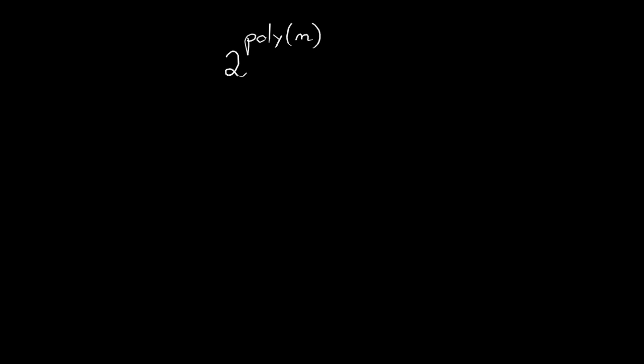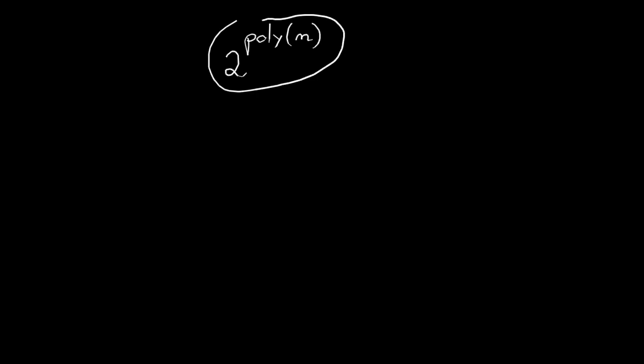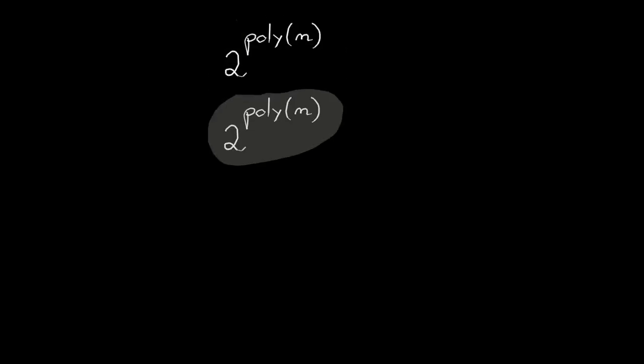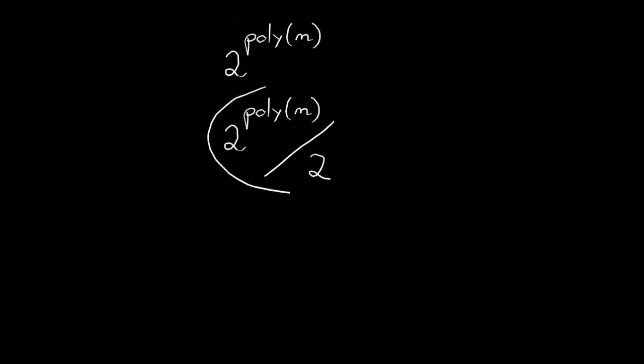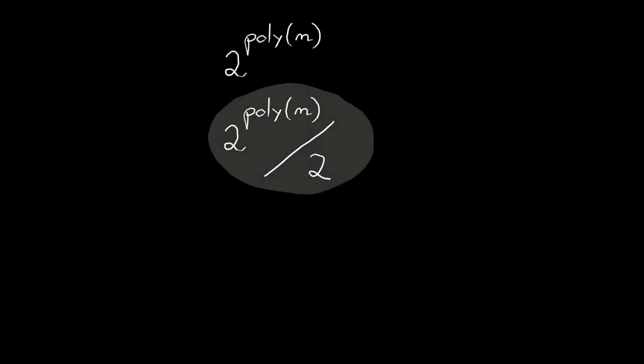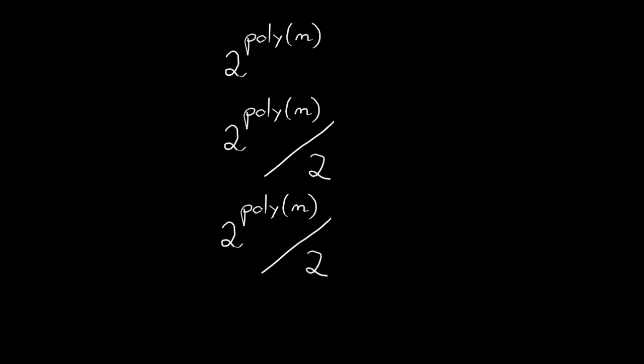The divide and conquer approach is recursive. The memory used is essentially for storing the polynomial number of intermediate configurations. The obtained algorithm is deterministic, so NPSPACE equals PSPACE.